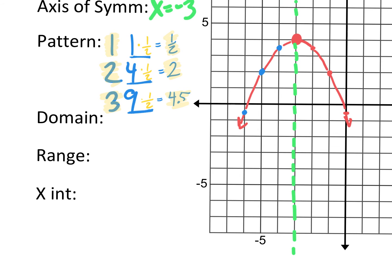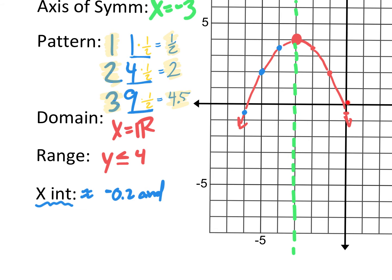The domain of any parabola is x equals all real numbers. The range is y less than or equal to the y value of the vertex, which is positive four in this case. For x-intercepts right now on these, let's just give an approximation. It looks like it crosses really close to zero but on the negative side — about negative 0.2. And it also crosses around negative 5.8. These are just approximations; later on we will get specific values for x-intercepts.